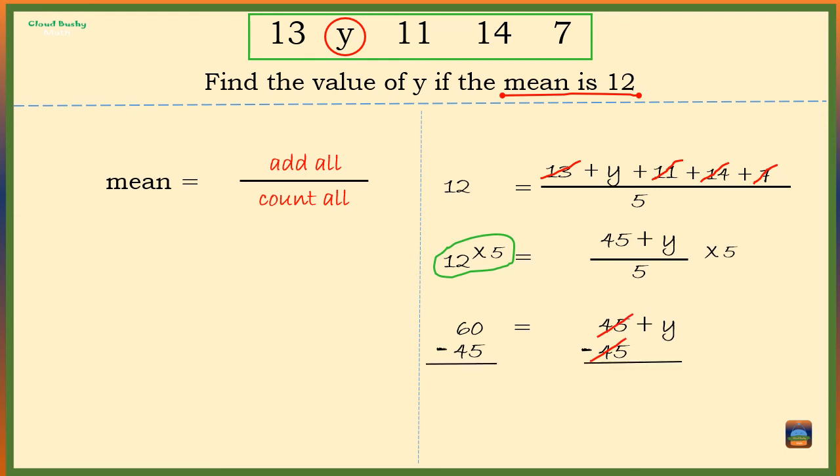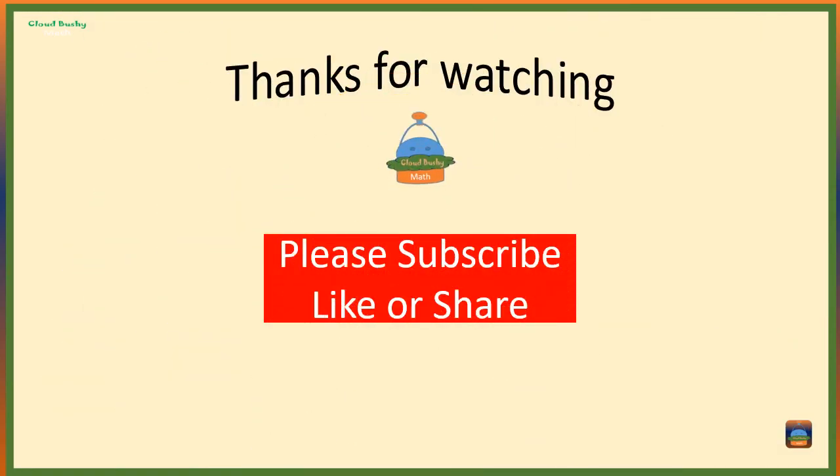We have y = 60 - 45, which is 15. So the missing value y is 15.